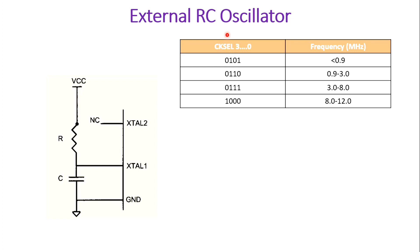Values 0 to 4 (0000 to 0100) are reserved for the internal RC oscillator. Values 5 through 8 (0101 to 1000) are reserved for the external RC oscillator. If we want to operate our microcontroller at less than 0.9 MHz, we select the corresponding bits. For a frequency range of 0.9 to 3 MHz, we go for the next bit value. For 3.0 to 8.0 MHz, we configure 0111, and for 8 to 12 MHz we configure 1000. Based on these bits, the external RC oscillator frequency range is selected.